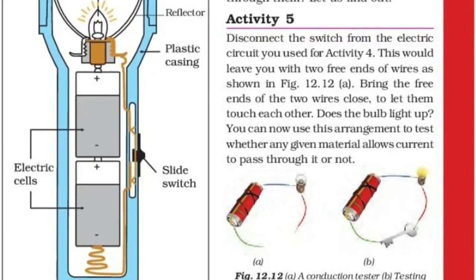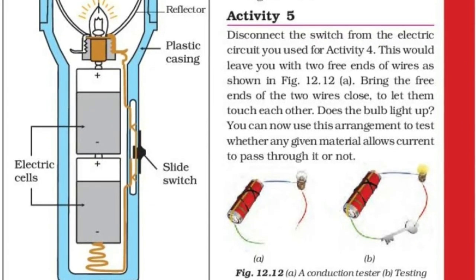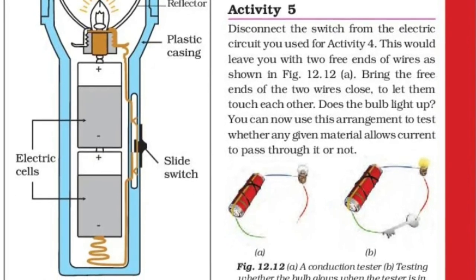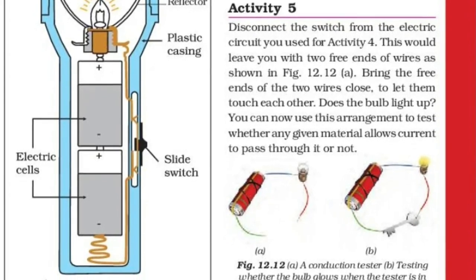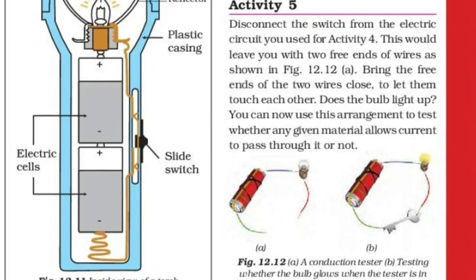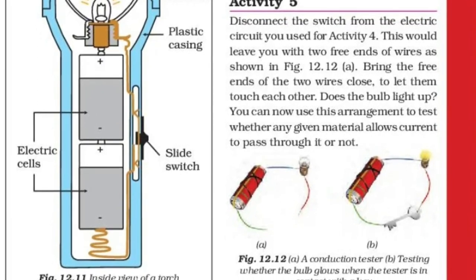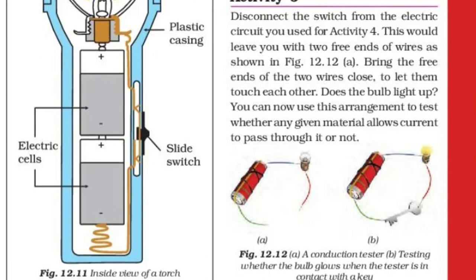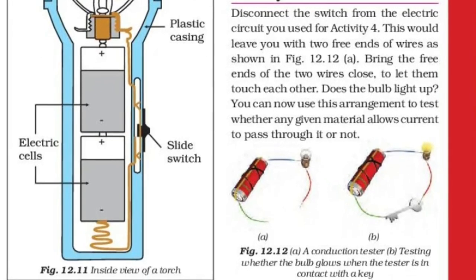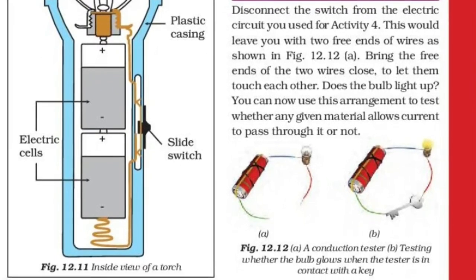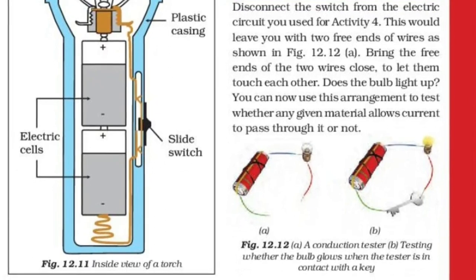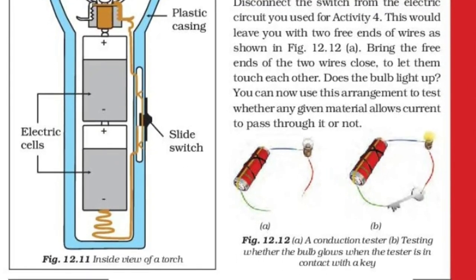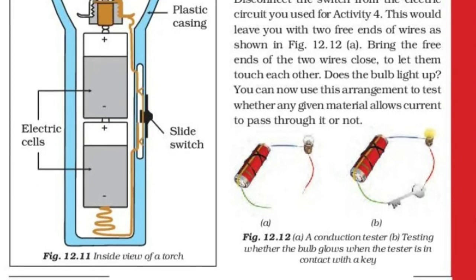Now we have a test. We have two wires, a bulb, and a cell. We will connect a key here. The key is metal, and since it is metal, the electricity will pass through it.